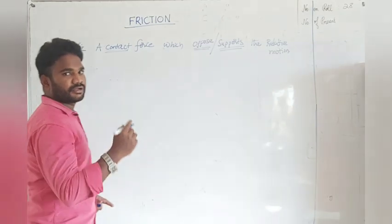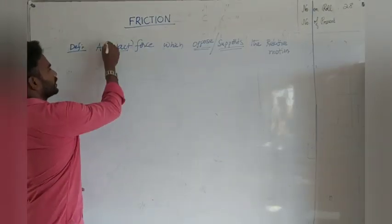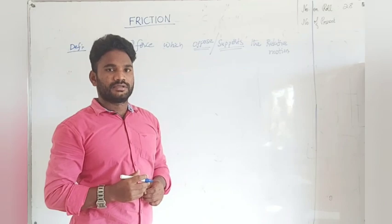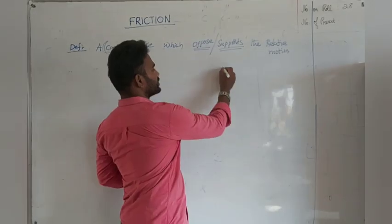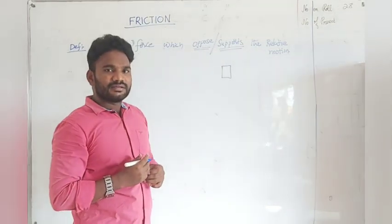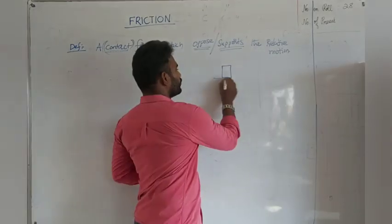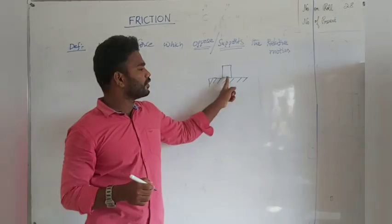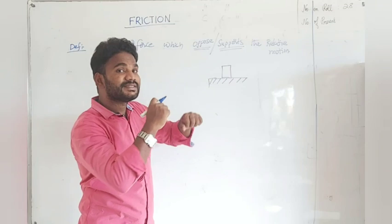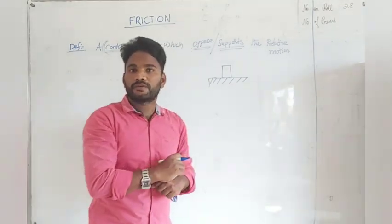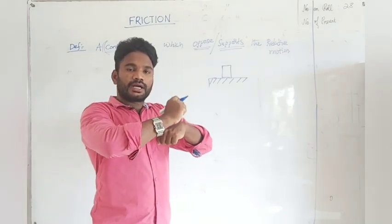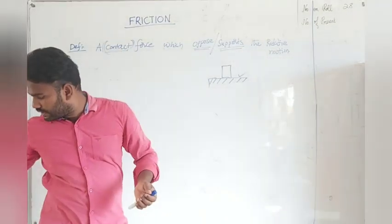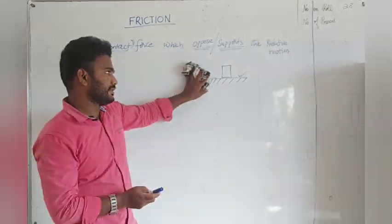Friction is a contact force. A single body cannot produce any friction. You need at least two bodies — either a surface and another block. There will be existence of frictional force between one body and another. Contact force means the force which is exerted between two bodies in contact, which is why a single body cannot produce any frictional force.